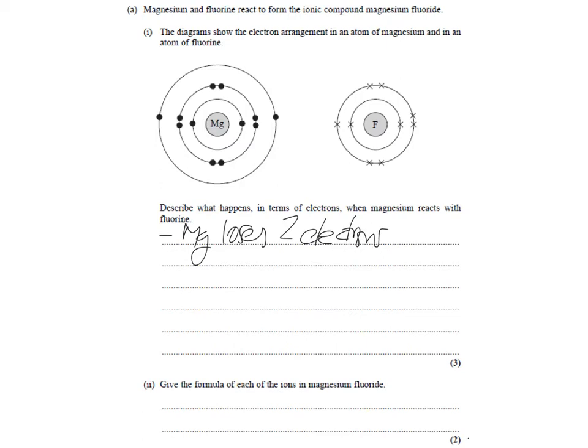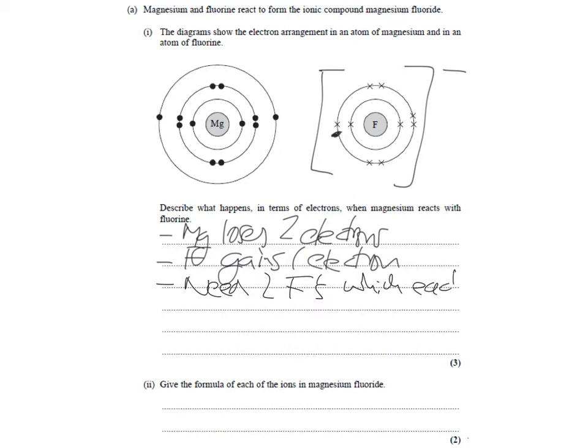And what happens when the magnesium reacts with the fluorine is that the magnesium, because it's a metal, Mg loses 2 electrons. Now, those electrons, well, one of them is going to slide nicely across into the fluorine here. OK. So, the fluorine now becomes fluoride, which is negative. So, we could say F gains 1 electron. And you might be thinking, well, where on earth does that other electron go, the other electron that we lost? Well, that means we need 2 fluorine atoms for our electrons to be housed in. So, need 2 F's, which each gain an electron.